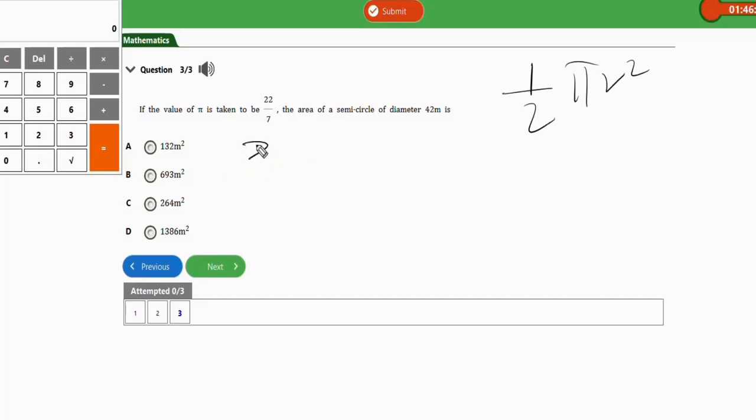Now in this question they gave the diameter, so to get r, divide the diameter by 2, which will give you 42 meter divided by 2, which is 21 meter. So whenever you are not given the radius but given the diameter, divide diameter by 2 to get the radius. Let's plug in this value of radius into the formula. This will give us half times π, which is 3.142, times 21 squared.